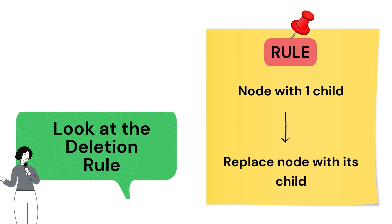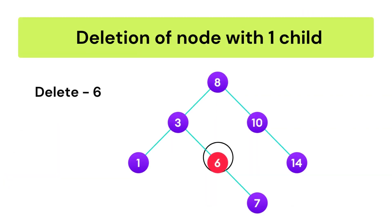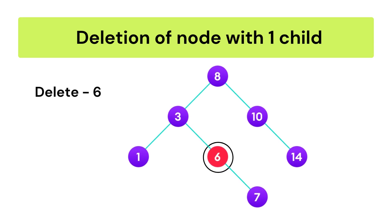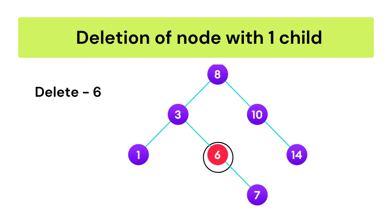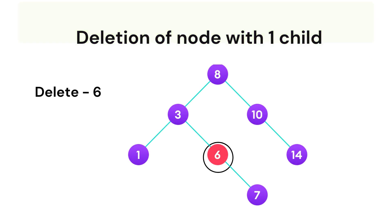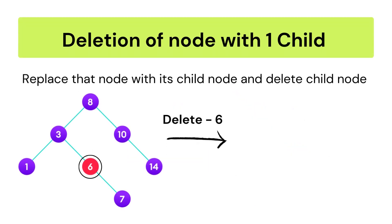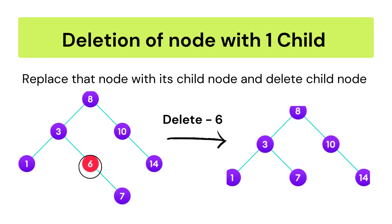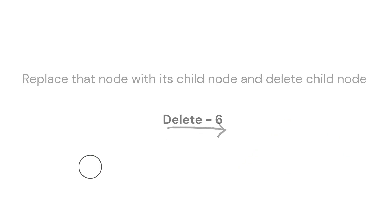Rule two: if the node to be deleted has only one child, simply replace the node with its child. In this case, we are going to delete node 6. After searching, we found node 6 in the BST, and this node 6 has only one child which is 7. So we just replace node 6 with 7. After replacing, the BST will look like the final result shown.